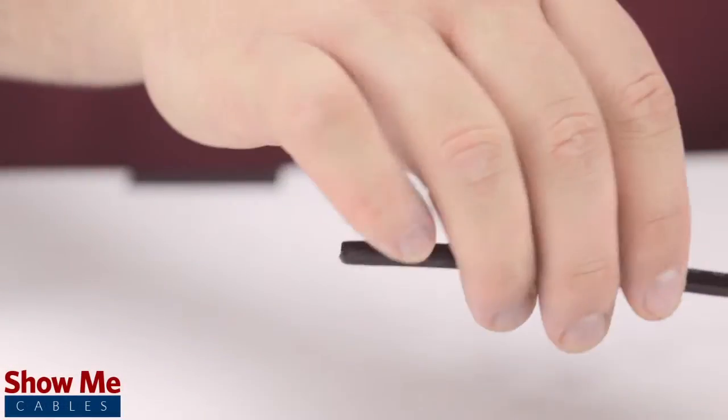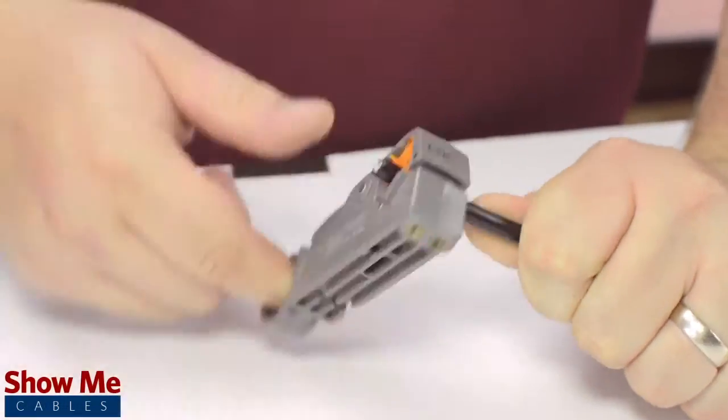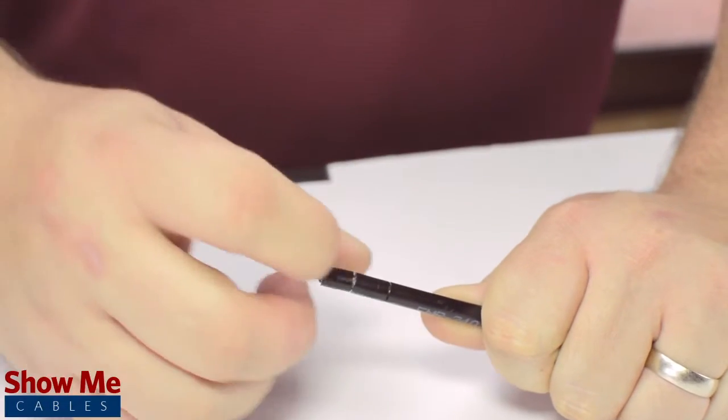Start by inserting the ferrule over the outer jacket of the cable. Then using your cable stripper, strip back the outer jacket and dielectric.